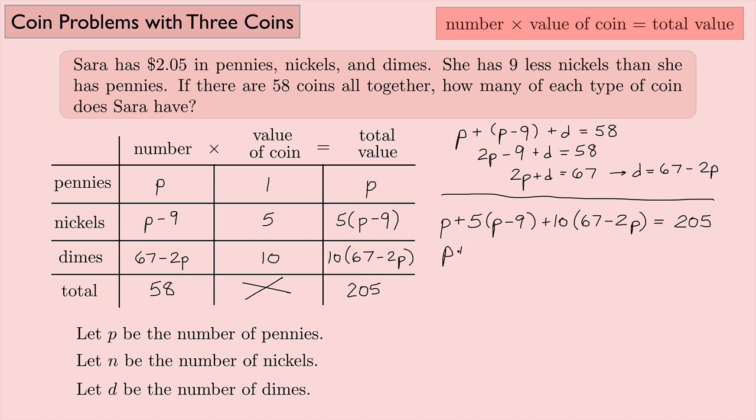So P plus, let's distribute the 5. This is 5 times P, that's 5P. And then 9 times 5, that's 45, and it's negative because of this minus here. 10 times 67, that's 670. And then I have a 2 here times 10, so it's going to be minus 20P. And then 205 over here.